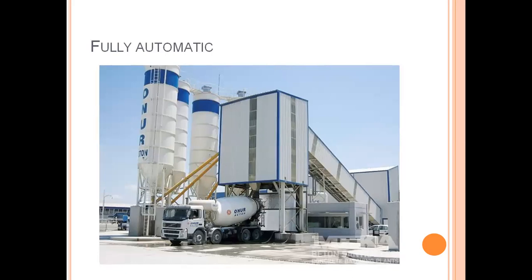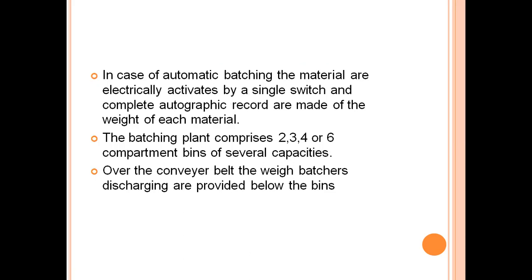In fully automatic batching, materials are electrically activated by a single switch and a complete autographic record is made of the weight of each material. The batching plant comprises two, three, four, or six compartment bins of several capacities over the conveyor belt, with weigh batchers discharging below the bins.